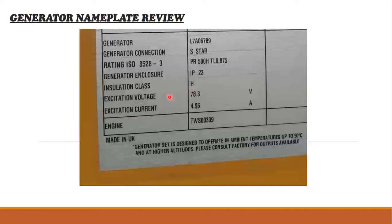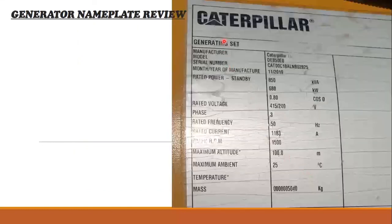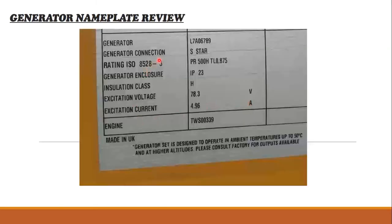Excitation voltage is 78.3 volts and excitation current is 4.96 amperes. There are three serial numbers on the nameplate: one for the engine, one for the generator (alternator), and one for the whole package. The Caterpillar serial number refers to the overall unit, while separate serial numbers identify the generator and the engine individually.